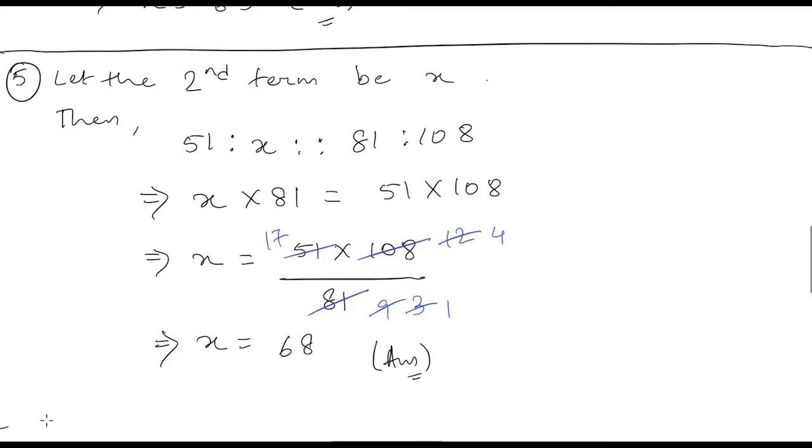Then we can write this in mathematical form: 51 is to X is in proportion with 81 is to 108. Again, we know that these numbers are in proportion, so we can follow that concept: product of means is equal to product of extremes. And we can write X into 81 is equal to 51 into 108.